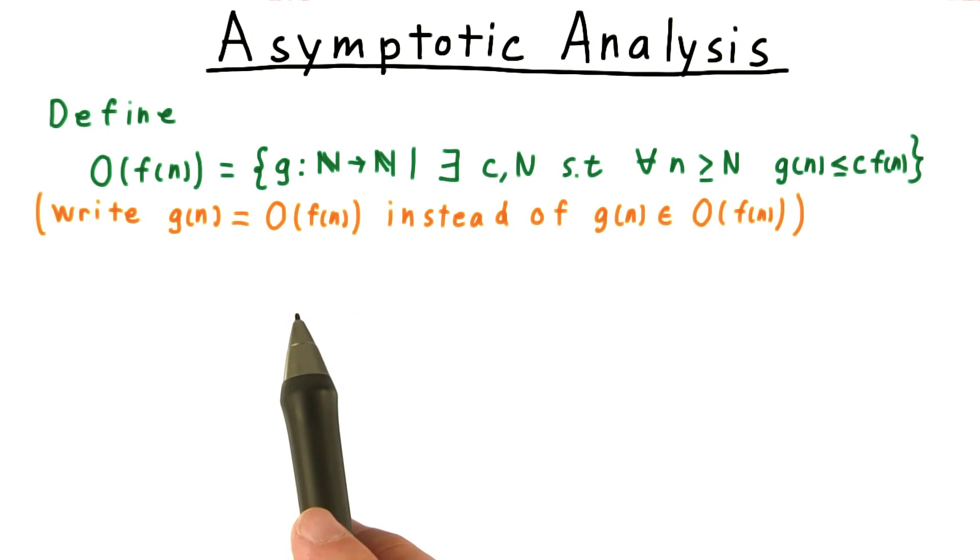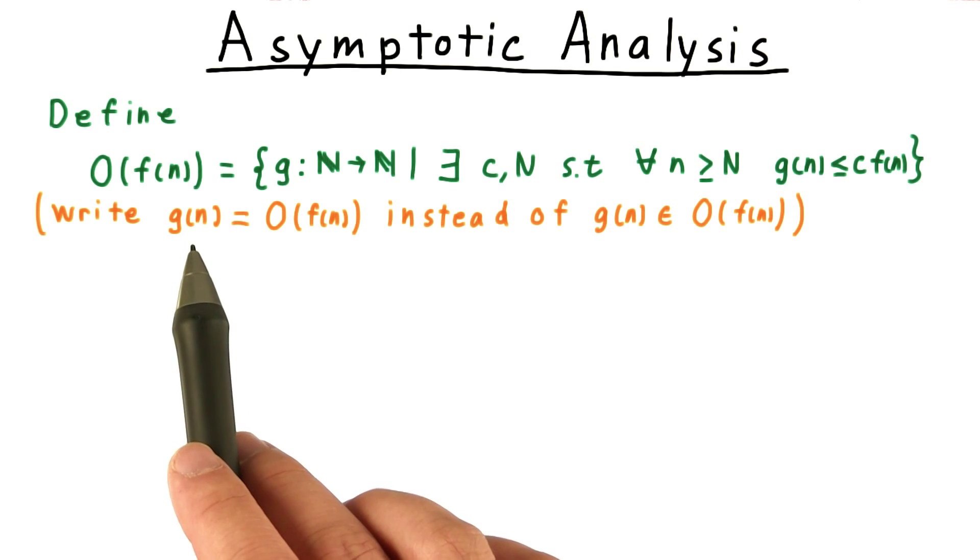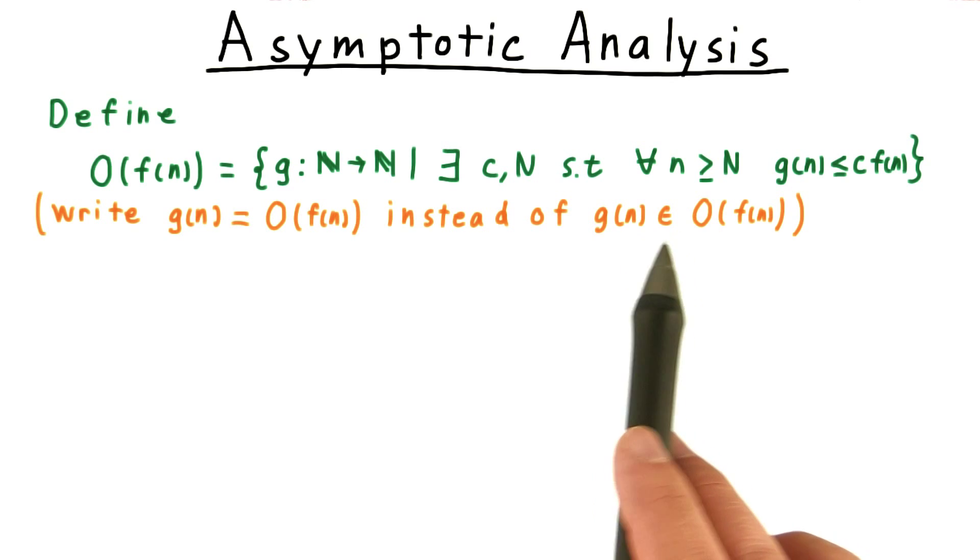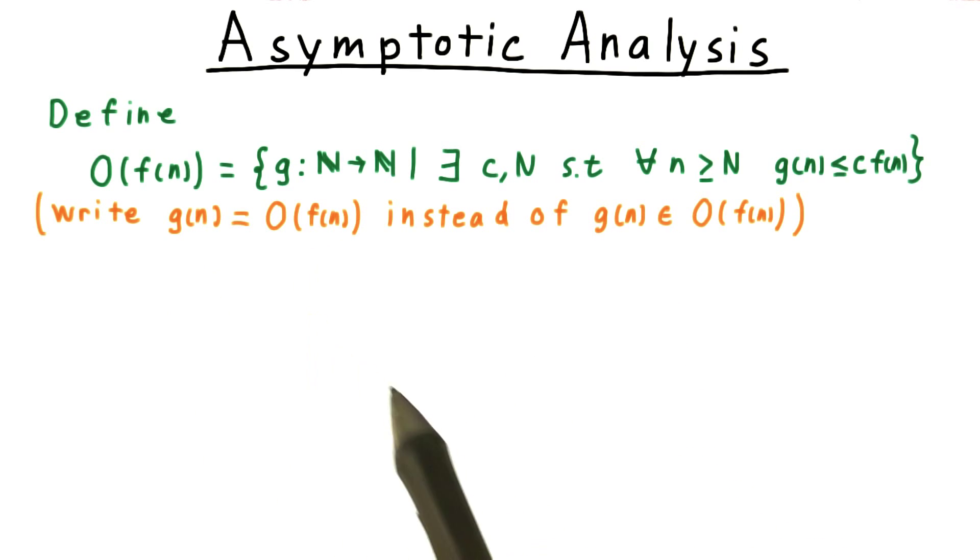Even though we've defined big O as a set, we write g equals O(f) instead of using the inclusion sign. We also say that g is order f. This definition can be a little confusing, but it should feel like the definition of a limit from your calculus class. In fact, we can restate this condition to say that the ratio of g over f converges to a constant under the lim sup.